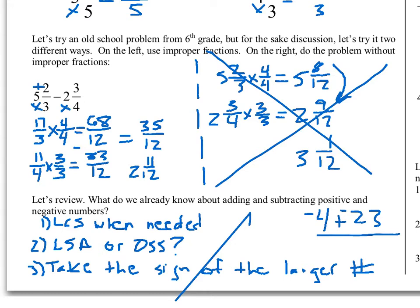Now that we're dealing with fractions, mixed numbers, and improper fractions — are any of these rules about positives and negatives going to change? No, they're not going to change. It's the same thing. The only difference is that we've got more details to keep track of: numerators, denominators, improper fractions, mixed numbers. So we just have to be super organized with our work and super focused on the details.